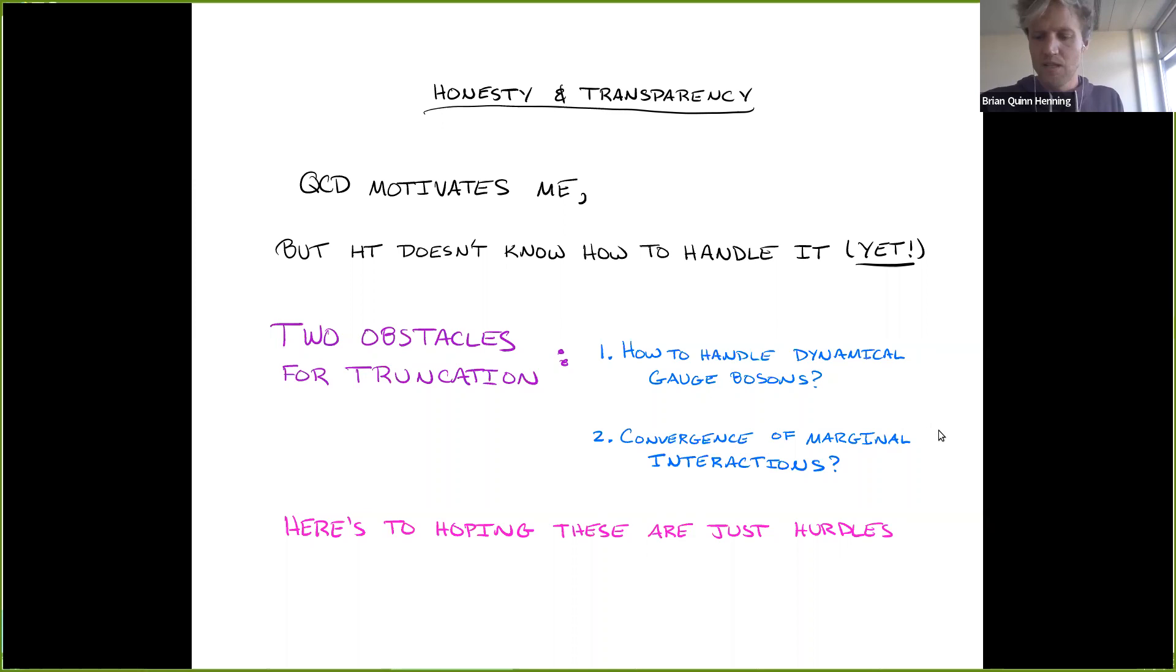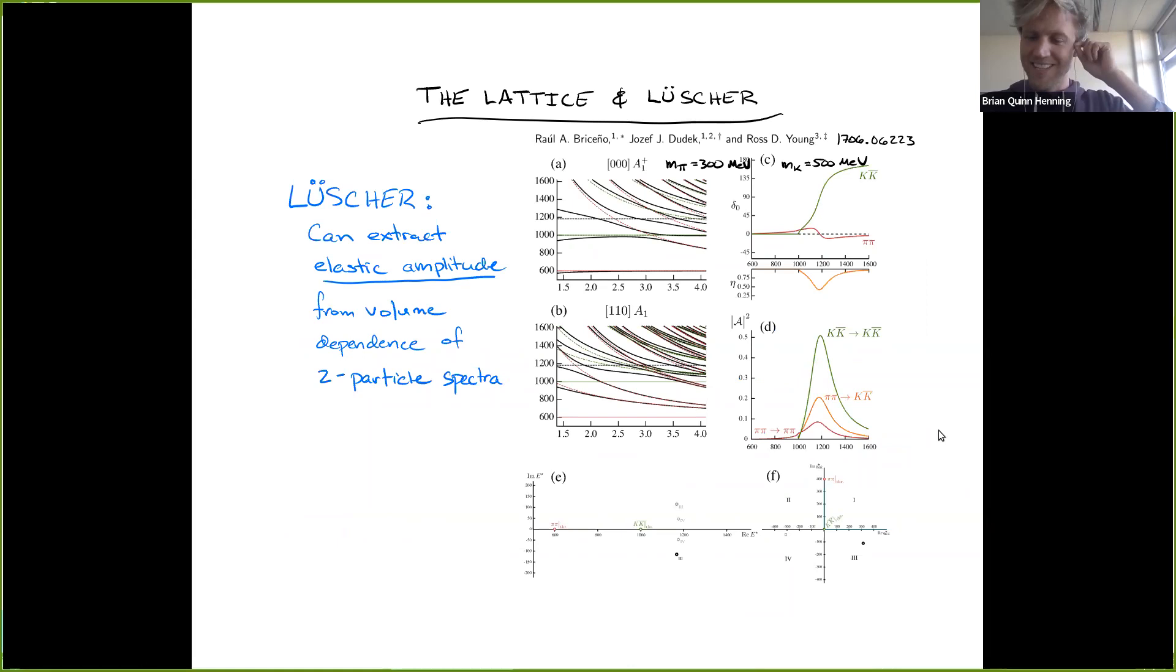Okay, so I've probably hopefully been clear enough. But let me say it. I'm motivated by QCD, but I don't know how to handle it yet with Hamiltonian truncation. So I don't want to oversell this method. But I think it's important to understand where it could go and where we want to go. So there's two obstacles for truncation, especially in these regards. Well, the first is handling dynamical gauge bosons. I had mentioned that earlier. I think there just needs to be some serious effort put towards it. And then there's convergence of marginal interactions. So with what we're basically, you are going to be keeping some set number of states to diagonalize something.